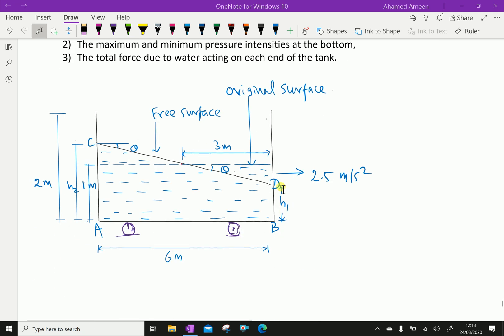Here, look at the open tank with dimensions. Suppose the original water surface is here, 1 meter height. After getting an acceleration of 2.5 meters per second squared in this direction, the water surface becomes like this. Now we will do the given things one by one.